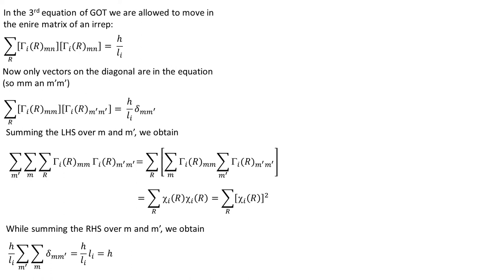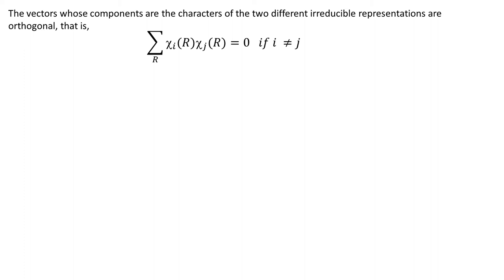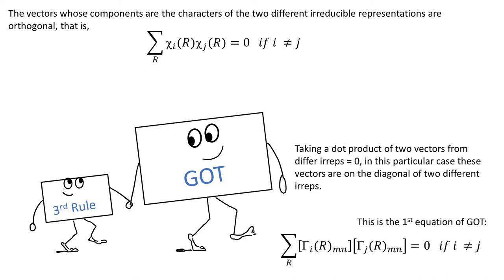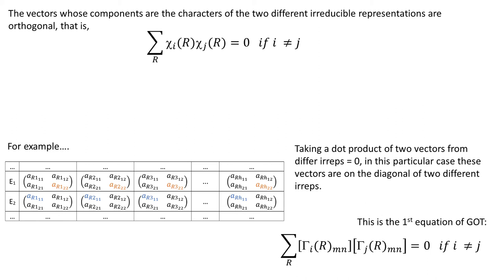Rule number 3. The vectors whose components are the characters of the two different EREPs are orthogonal. That follows very straightforwardly from GOT. Taking a dot product of the two vectors from different EREPs gives 0. Just in this particular case these vectors on the diagonal of the two different EREPs.